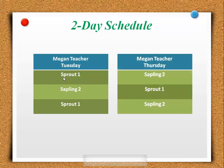So if you look here at sprout, you'll have your sprout class three times — one, two, and three. And then also sapling one, two, and three. So it evens it out.